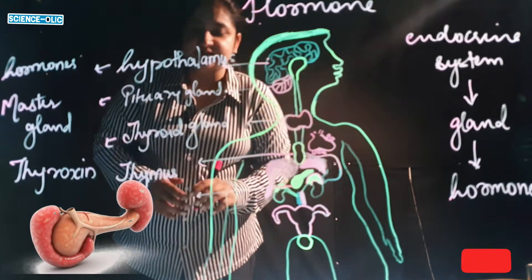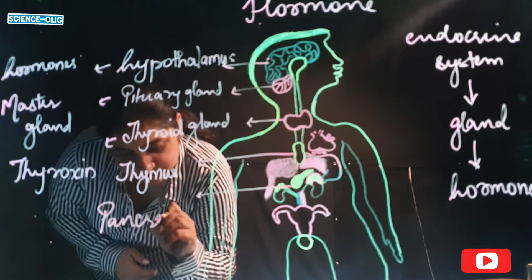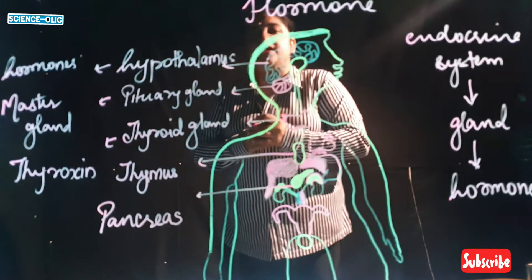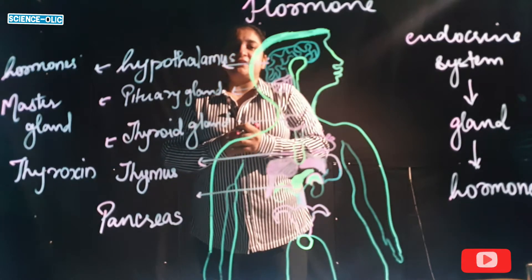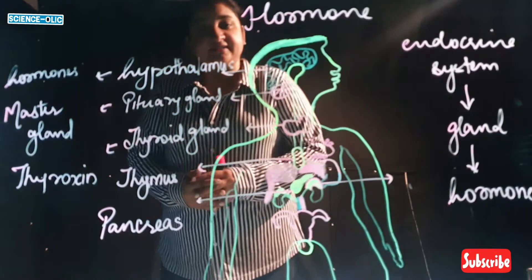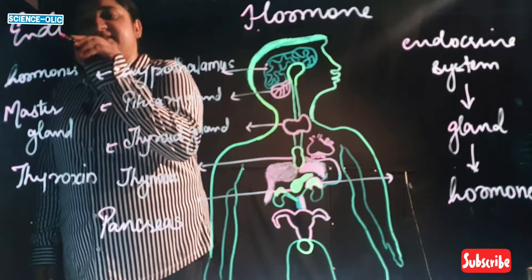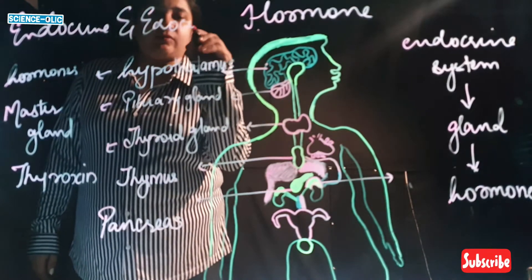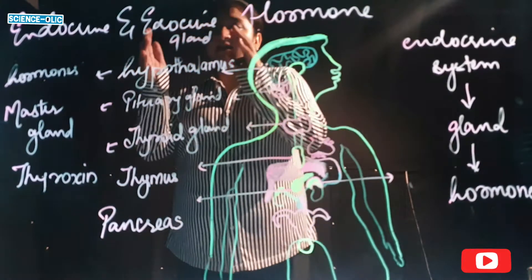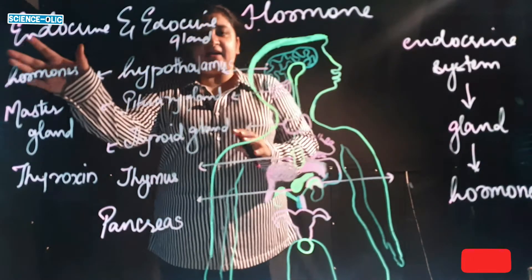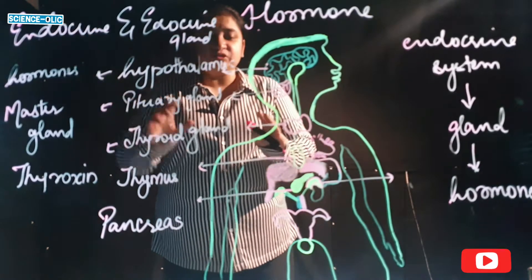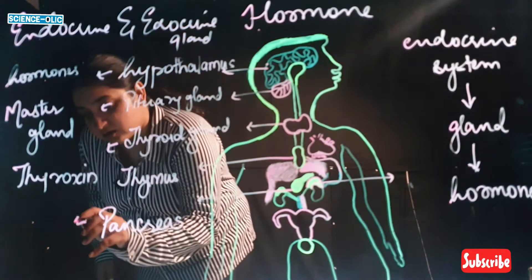This is the pancreas — you might be familiar with diabetic patients, in whom the blood sugar level is very high. The pancreas is a mixed gland; it consists of both endocrine and exocrine components. The exocrine part is larger, while the endocrine part is smaller. In diabetic patients, insulin is produced in low amounts.